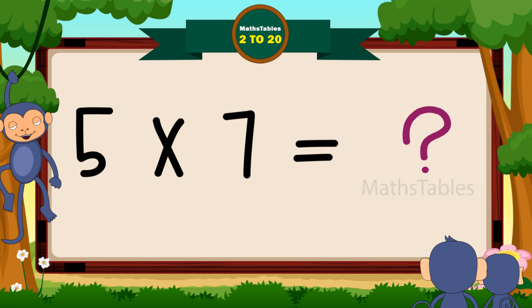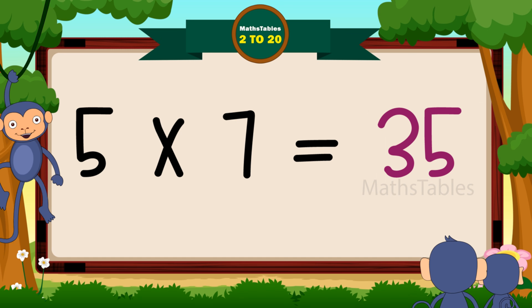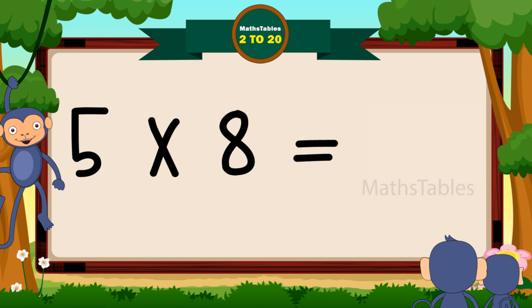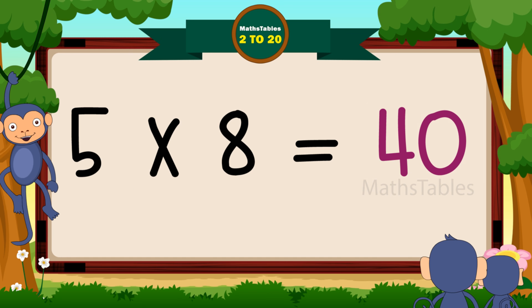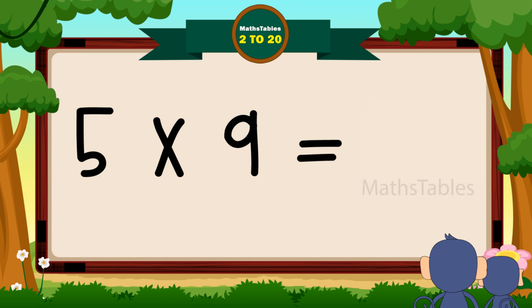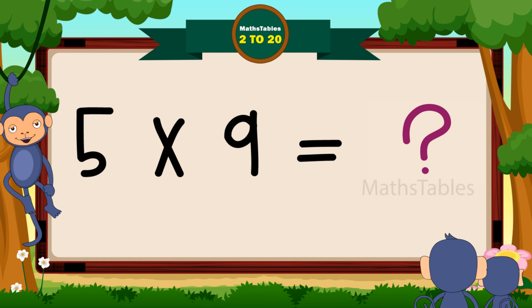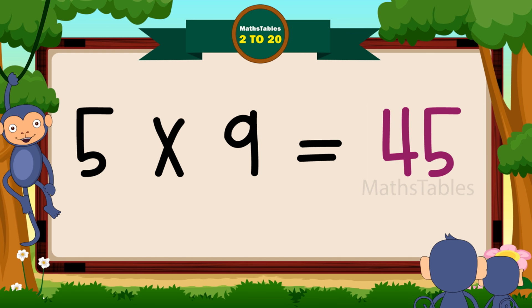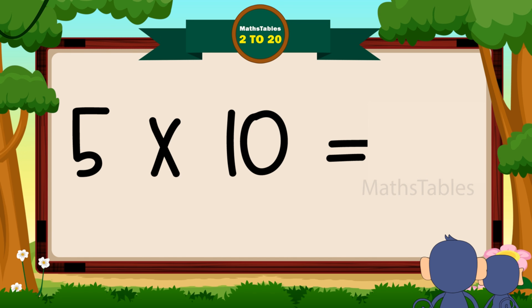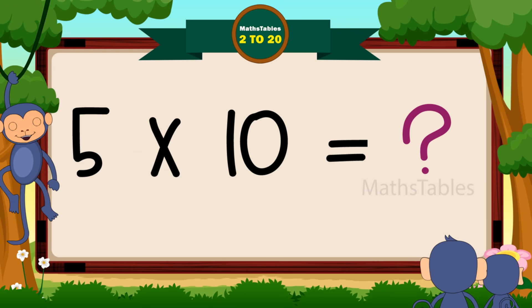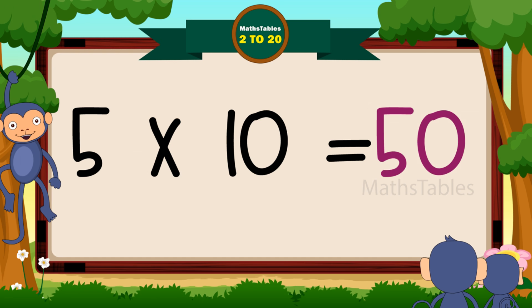Five sevens are thirty-five. Five eights are forty. Five nines are forty-five. Five tens are fifty.